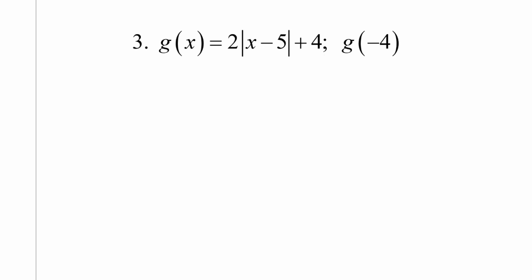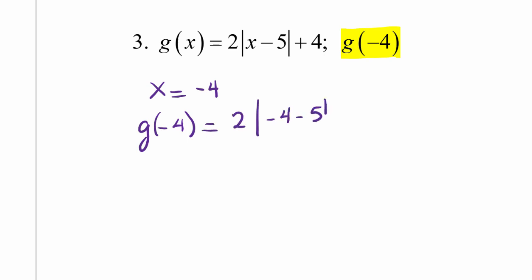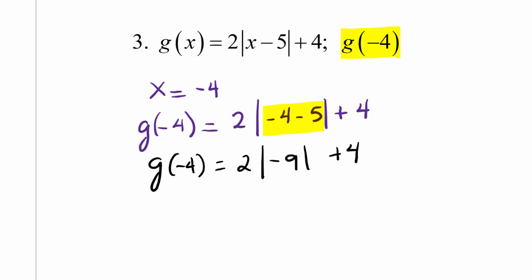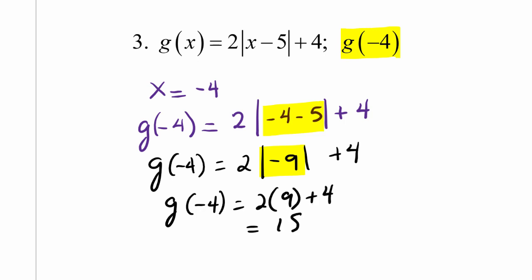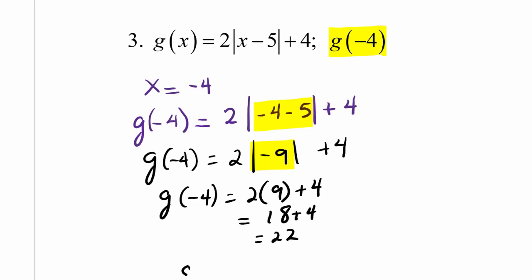Problem number 3: we have an absolute value function, and this time the function is named g. So g of x is equal to 2 times the absolute value of x minus 5, plus 4. We're asked to evaluate g of negative 4, which means x is negative 4. We substitute negative 4 into the function. With absolute value, you simplify inside first — they act like parentheses — giving 2 times the absolute value of negative 9 plus 4. The absolute value of negative 9 is positive 9, so we have 2 times 9 plus 4, which is 18 plus 4, or 22.